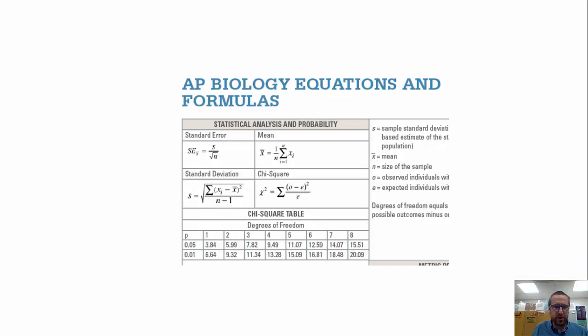This is going to be a way that you can test observed results and compare them to expected results and see if there is a statistically significant difference or not. So basically whether you can reject or fail to reject your null hypothesis. Anyway, the chi-square test formula is one of the formulas that's on the AP Biology formula sheet. It is right here. So let's take a closer look at that.